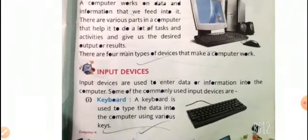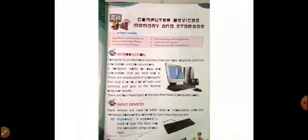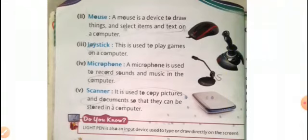First of all, first input device is Keyboard. A Keyboard is a set of keys as we are known with it very well. Here, the picture is also given, we can see here. Secondly, Mouse. Mouse is a Pointing Device and it is used to select the items or to point a particular item.